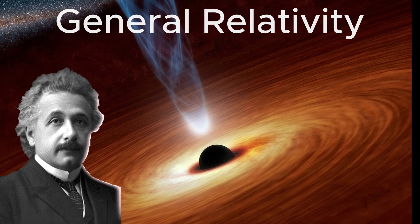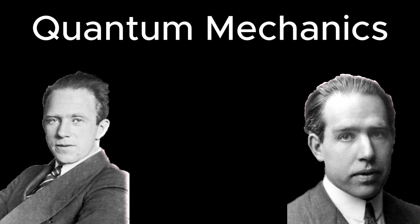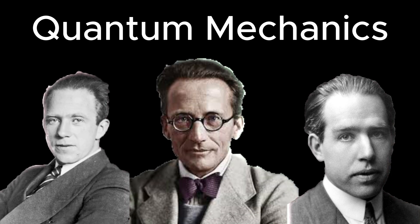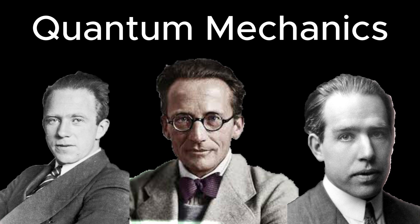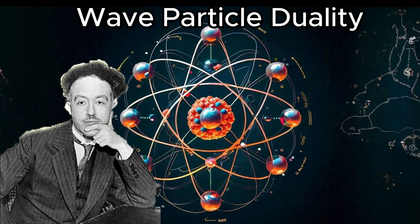Einstein also gave the theory of photoelectric effect and showed that light behaves like particles, leading to the development of quantum mechanics. Quantum mechanics, further developed by scientists like Niels Bohr, Werner Heisenberg, and Erwin Schrödinger, revealed the strange and fascinating behavior of particles at very small scales. Louis de Broglie proposed that both light and matter have wave-particle duality, shaping the quantum model of the atom.